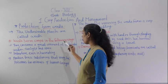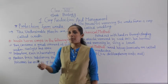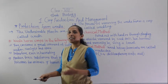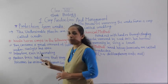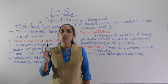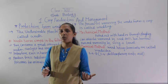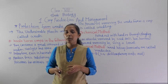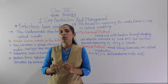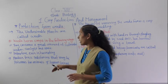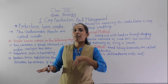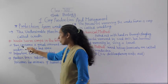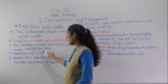Weeds harm crops in the following ways. They consume a great amount of nutrients, water, sunlight, and space which are required for the crop. If weeds grow along with crops, the crops will not get the proper amount of water, nutrients, space, and sunlight, which will affect the quality of the crops. That is why we must remove weeds from the field.